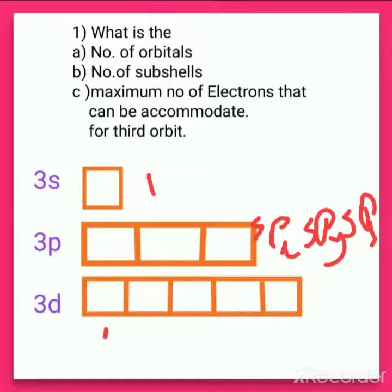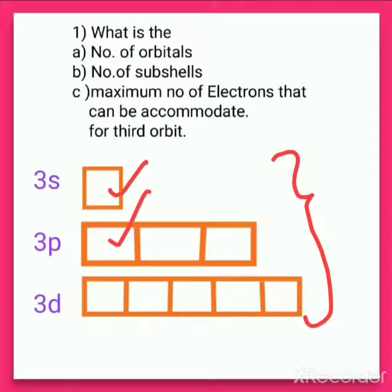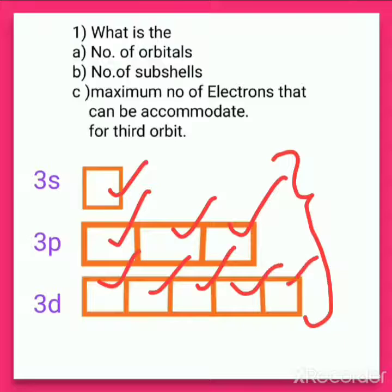In the d subshell, there are five orbitals: 3dxy, 3dyz, 3dzx, 3dx²-y², and 3dz². So in the case of the d subshell, there are five orbitals. The total number of orbitals present in the third orbit is 1 + 3 + 5, which equals nine orbitals.